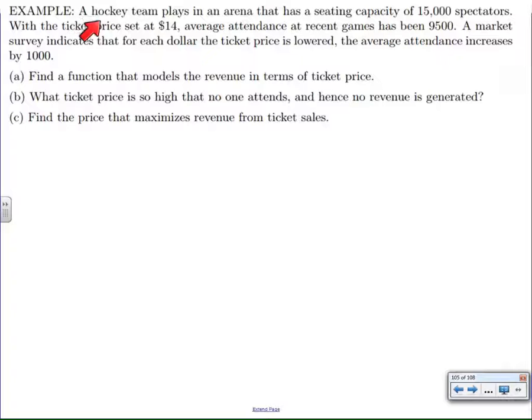For example, we've got this hockey team playing in an arena with 15,000 spectators. They know that if they charge $14, they'll get 9,500 seats. But they also find out they'll get more seats if they lower the price. For every dollar they lower the price, they can get an extra thousand more fans. So what we're supposed to do is find a function that models revenue in terms of ticket price, figure out what ticket price is so high that nobody comes anymore, and find the price that maximizes revenue from ticket sales.